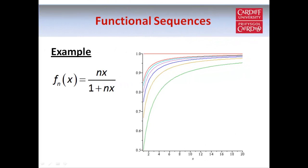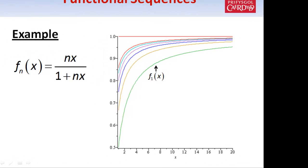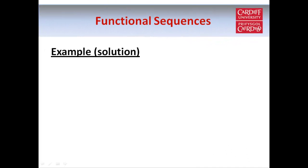Here's a diagram of the first few functions in our sequence. f1(x) is the green line and f2(x) is the yellow line. The general trend is that the functions appear to be monotonically increasing and bounded above by the constant function f(x) = 1. As we'll see, f(x) = 1 is actually the limit function for this sequence.